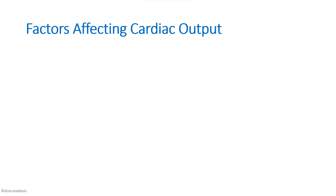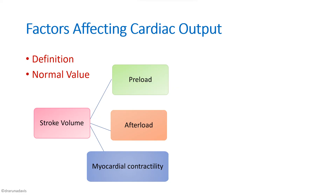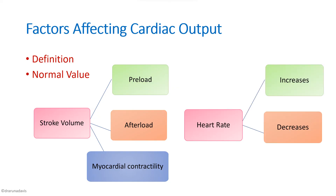When a question on factors affecting cardiac output is asked, start with the definition, write about normal values, then cover factors affecting stroke volume — preload, afterload, and myocardial contractility — then factors affecting heart rate, and finally applied aspects like shock, in which decreased cardiac output leads to decreased tissue perfusion.